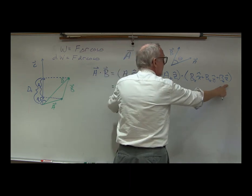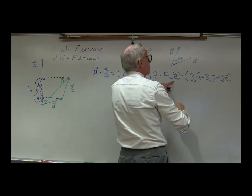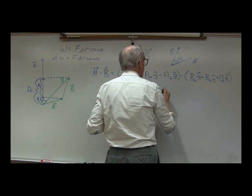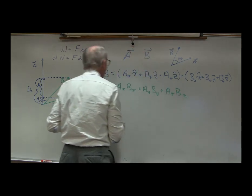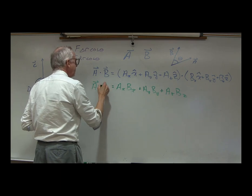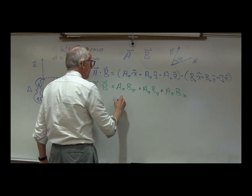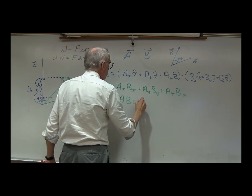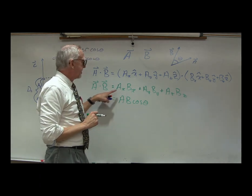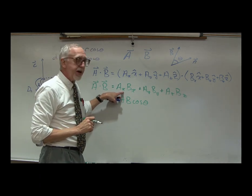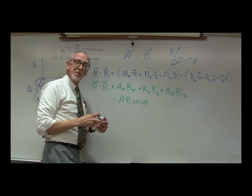Continuing: ŷ·ẑ is zero, ẑ·x̂ is zero, ẑ·ŷ is zero, and ẑ·ẑ is one. So we get plus Az·Bz. This gives us another way of determining the dot product of two vectors: A·B equals Ax·Bx + Ay·By + Az·Bz.